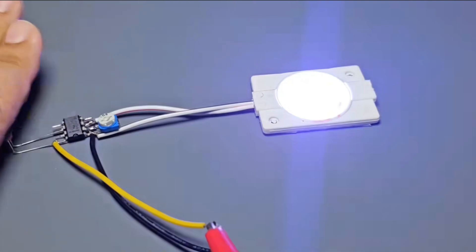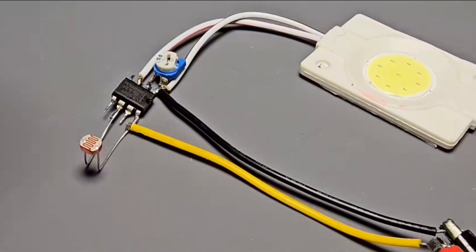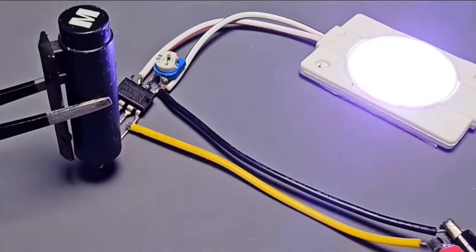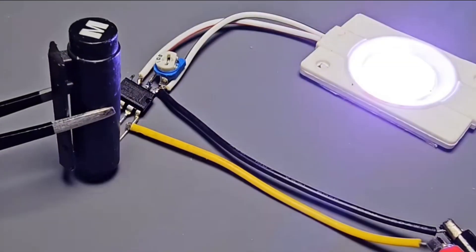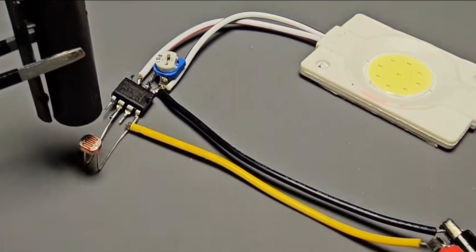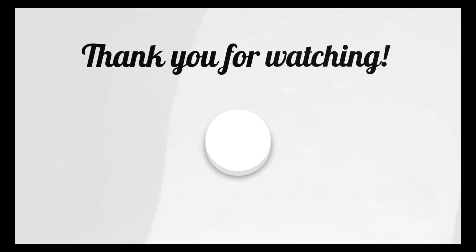Now, you can use this circuit normally. The light will automatically turn off when there is light during the day. The light will automatically turn on when the light is weak at night.